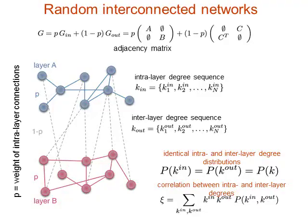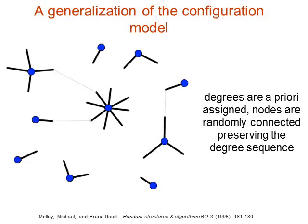I will focus on a specific system: two random networks connected by random connections. The only constraint is that the degree sequence — the number of neighbors each node has within its layer or with the other layer — is specified a priori by the degree sequences. This is a generalization of the standard configuration model: once you fix the degree sequence, you connect random nodes by selecting half-edges, and the resulting network is random with no correlations but with the degree sequence fixed as a constraint.